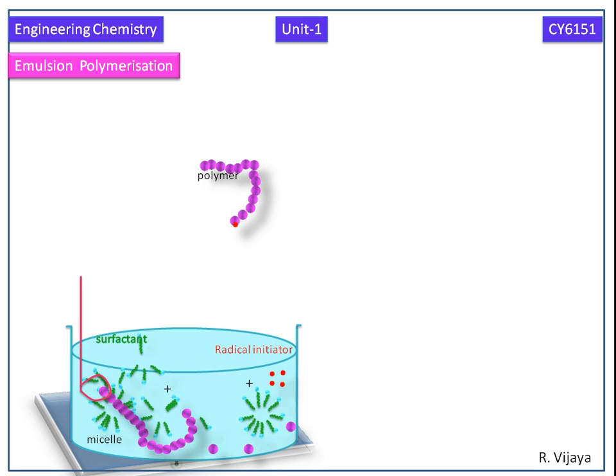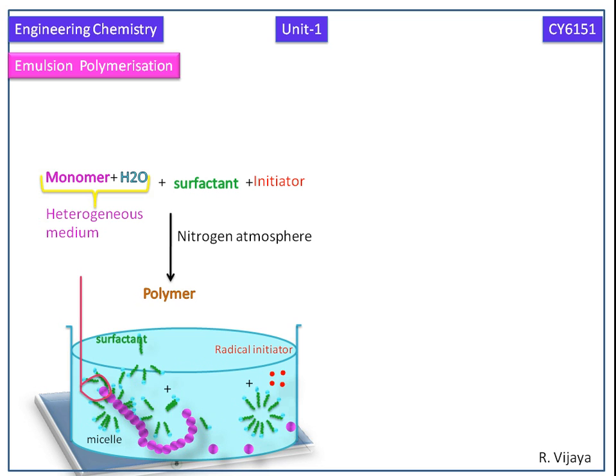This is the scheme of the emulsion polymerization reaction. The advantages are: the rate of polymerization is high, heat can be easily controlled, and hence viscosity buildup is low.